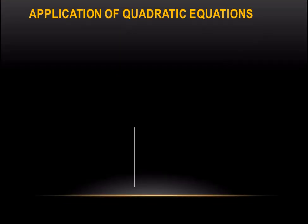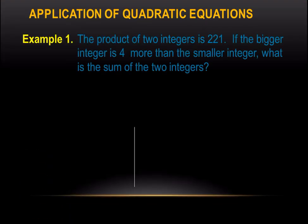Let us start with our first example. The product of two integers is 221. If the bigger integer is 4 more than the smaller integer, what is the sum of the two integers?